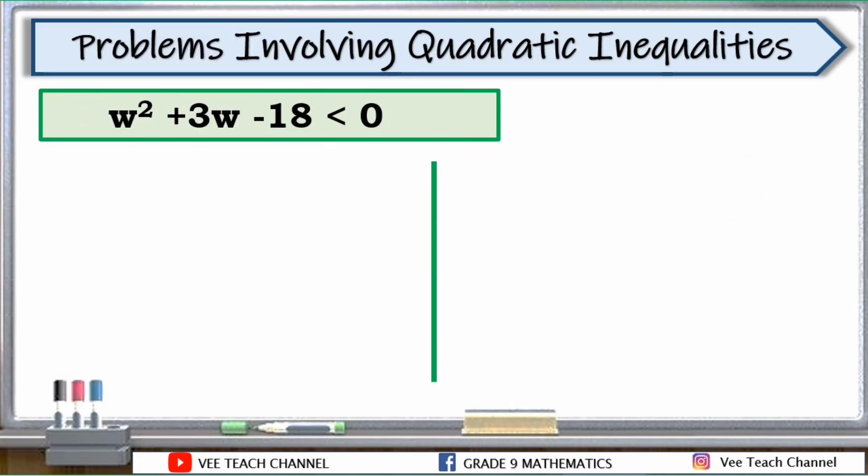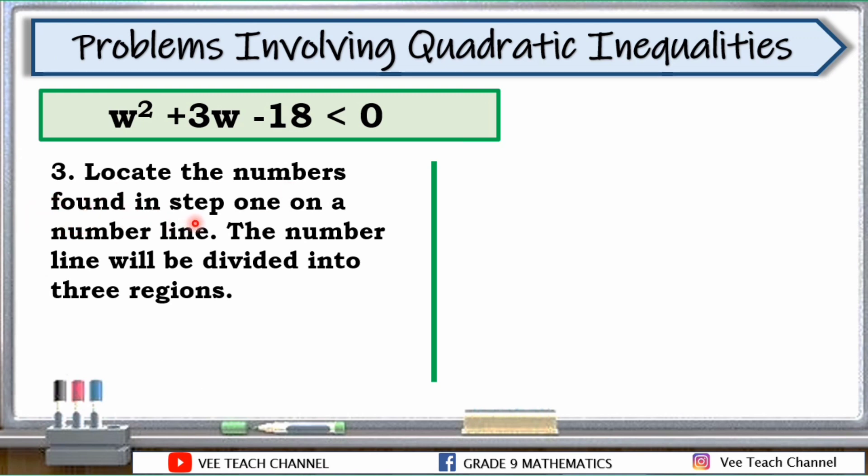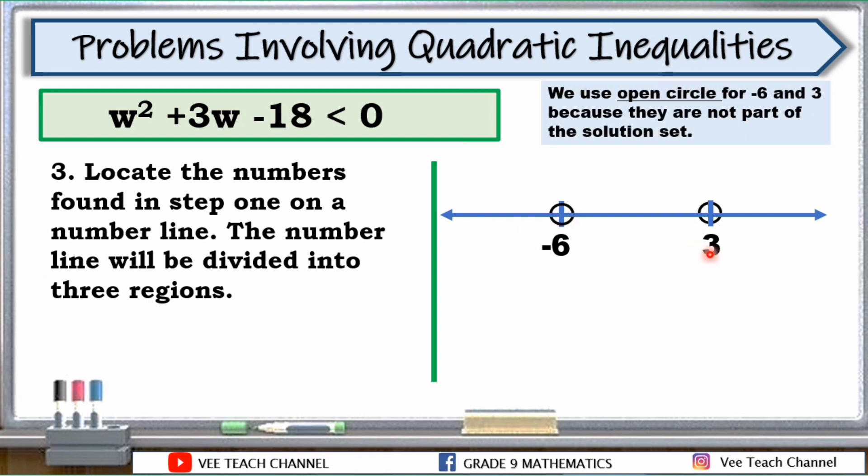After getting the roots of our equation, let's locate the numbers found in step 1 on a number line. The number line will be divided into 3 regions. Let's make a number line and locate the numbers. Yung nakuha natin kanina na roots, yun yung negative 6 and 3, ilagay natin sa number line. At we use open circle. Bakit open circle? We use open circle for negative 6 and 3 because they are not part of the solution set. Remember this is less than. Pag less than, hindi shaded yung ating circle. Open sya o hindi nakashade. Pero kung ang nakalagay dyan ay less than or equal to, dun tayo magshade. At ito na nga yung tatlong regions ng ating number line.